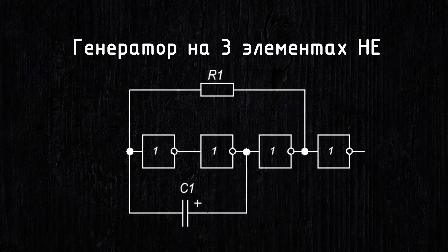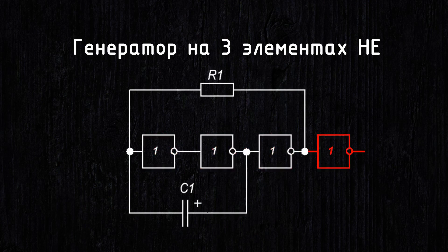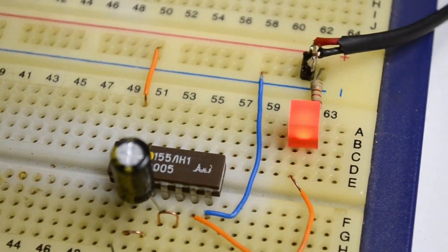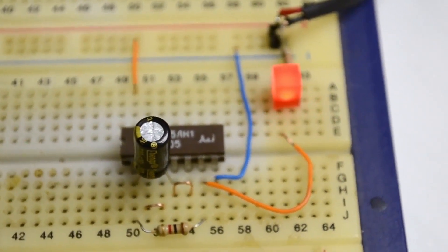Let's start with the classic one, which was presented in the previous video. It requires three elements NOT connected in sequence, and one additional last element which is a buffer, so that the further part of the circuit does not affect the operation of the generator. The frequency of such a generator will be approximately equal to 1 divided by RC.